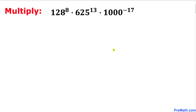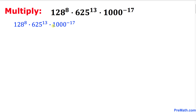Welcome to pre-math. In this video tutorial we are going to multiply and simplify these given exponential numbers. Let's look at these numbers: 128 power 8, times 625 power 13, times 1000 power negative 17. We are not supposed to use calculators of any kind. Let's get started with the solution — here I have just copied down our original problem.